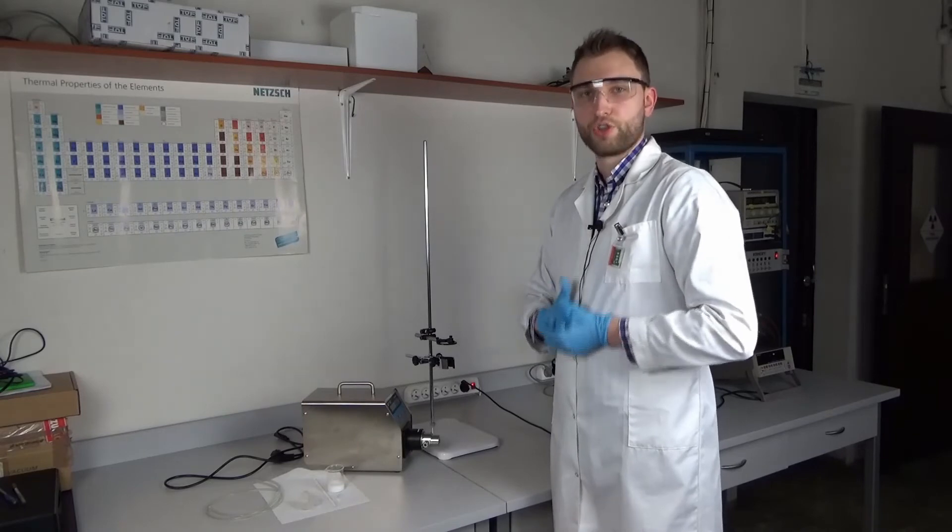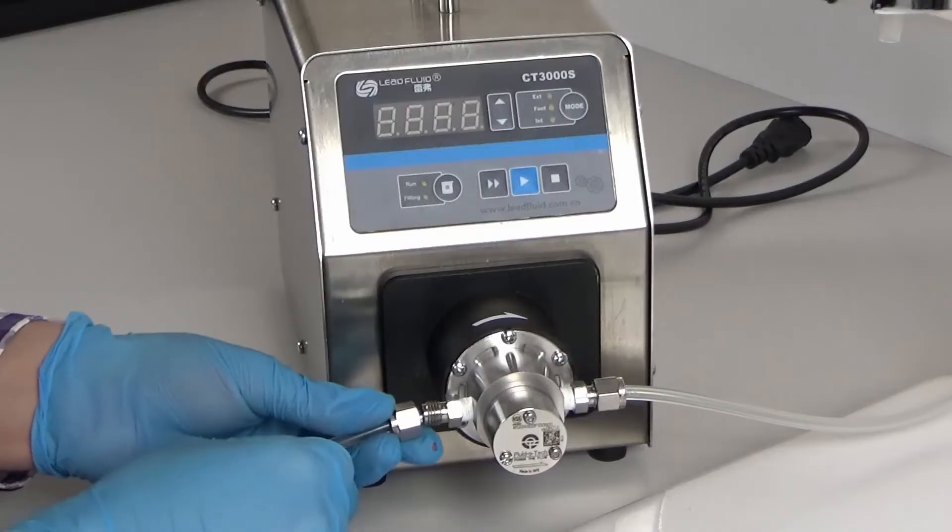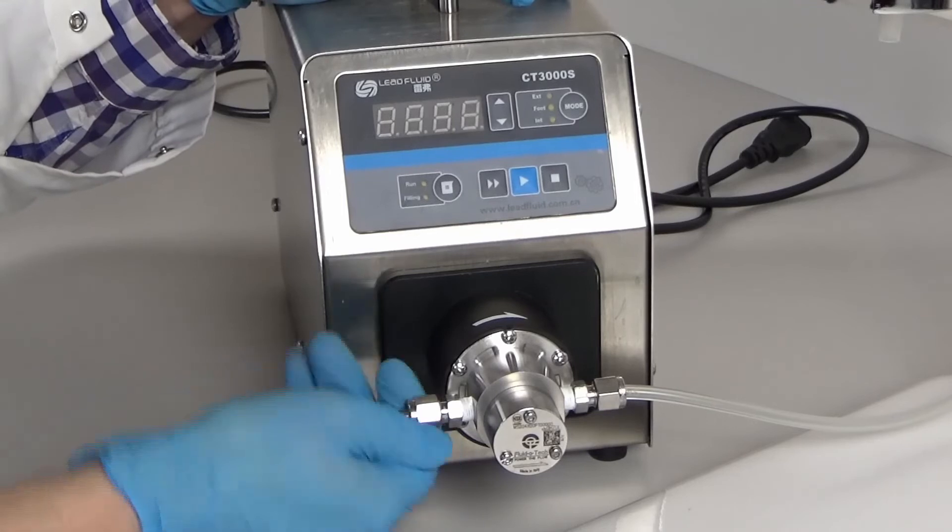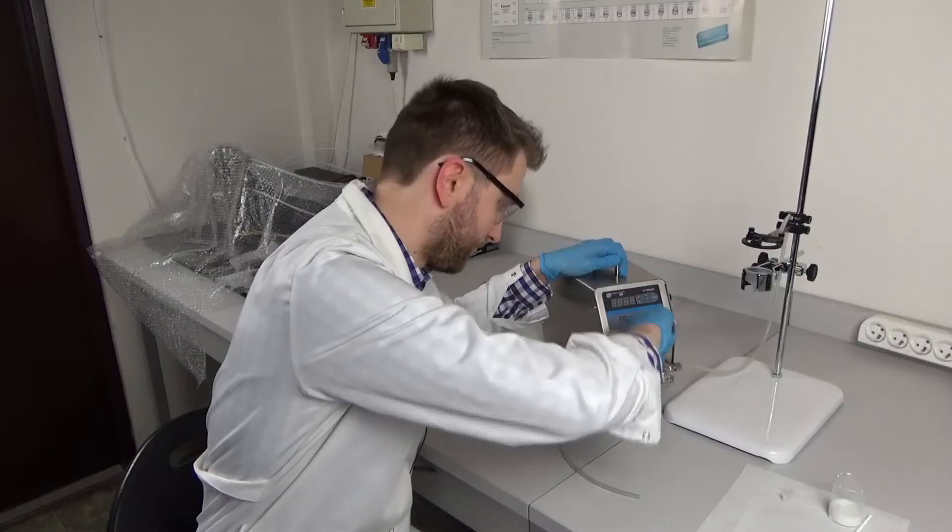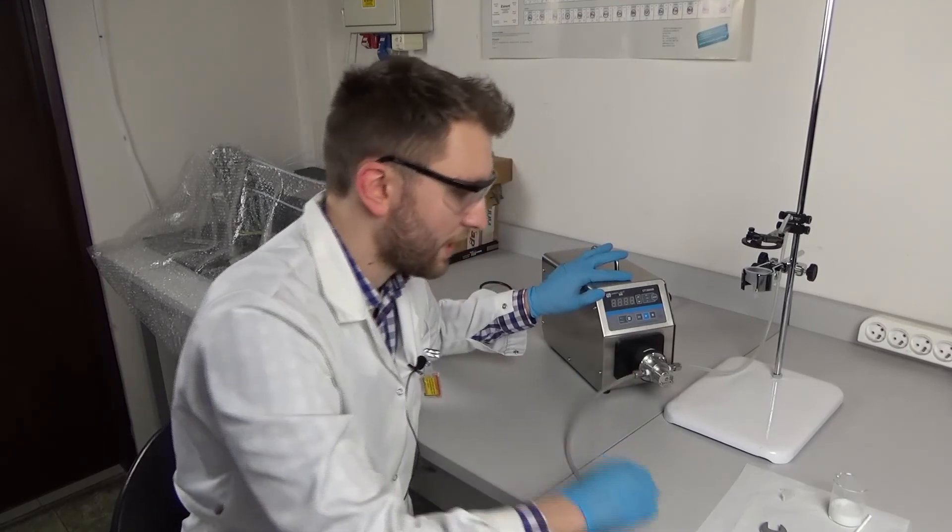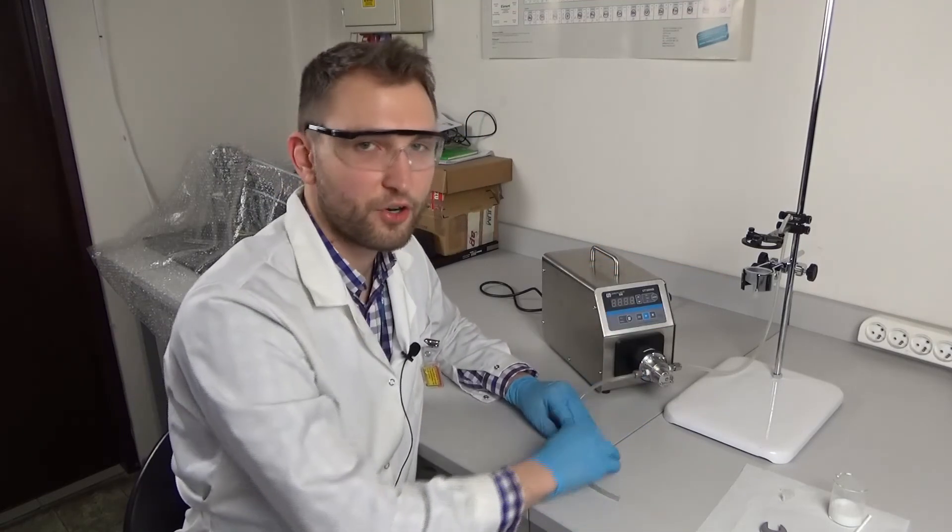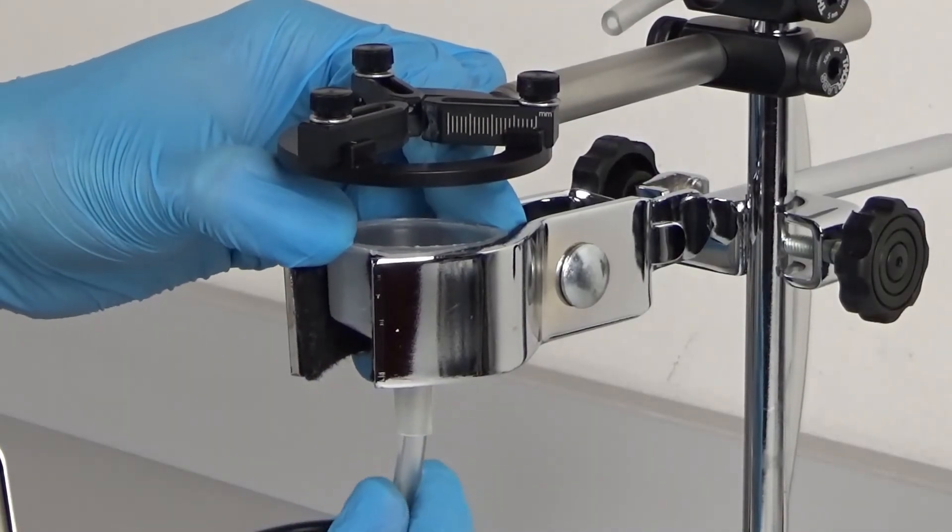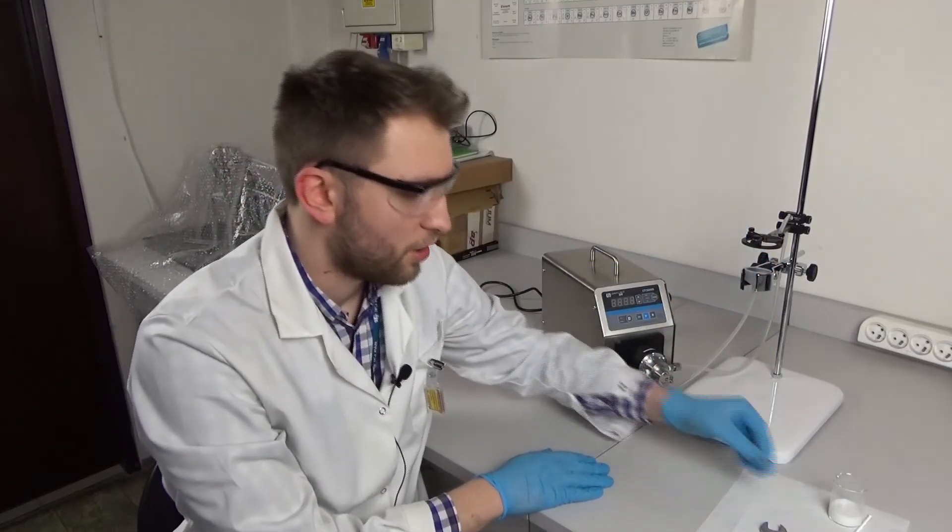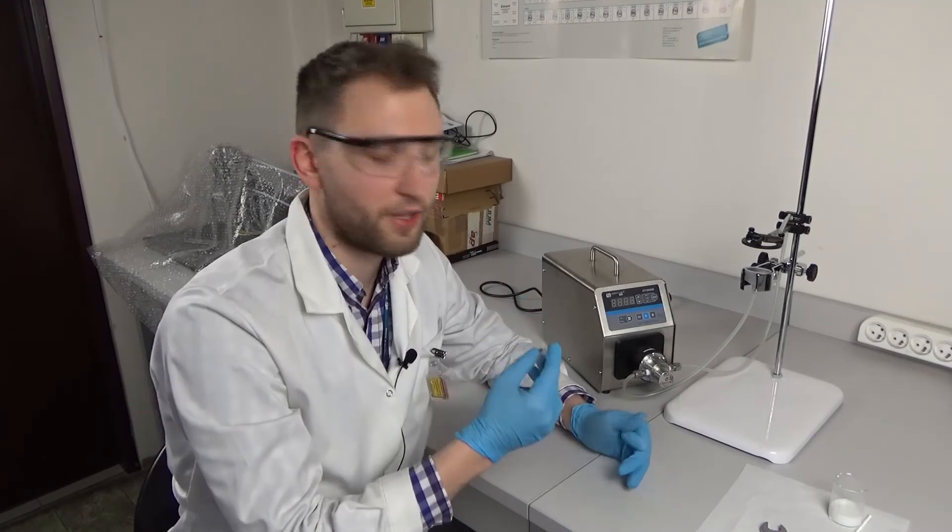So let's assemble all the parts. The first thing I'm going to do is to connect the pipe to the head pump through the so-called Swagelok system. Let's make sure that the pipe is sitting tight. Good. So now I will connect one end of the pipe to a funnel and the other to the nozzle. Here it's just a simple connection. When connecting the nozzle to the pipe, I need to be very careful because if I push too hard, the nozzle might break.